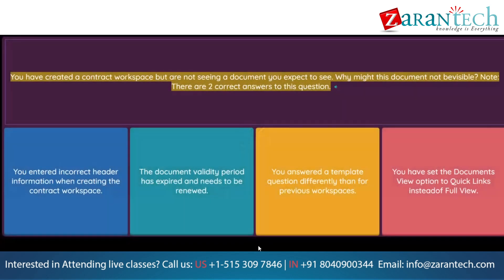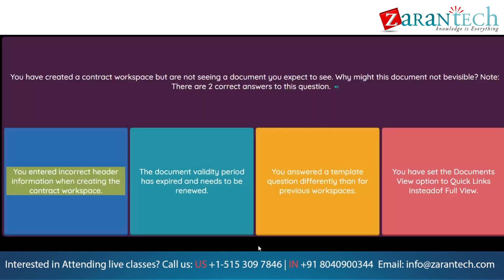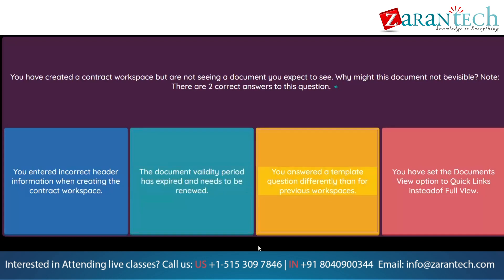Question: You have created a contract workspace but are not seeing a document you expect to see. Why might this document not be visible? Note: there are two correct answers. Option 1: You entered incorrect header information when creating the contract workspace. Option 2: The document validity period has expired and needs to be renewed. Option 3: You answered a template question differently than for previous workspaces. Option 4: You have set the documents view option to quick links instead of full view.